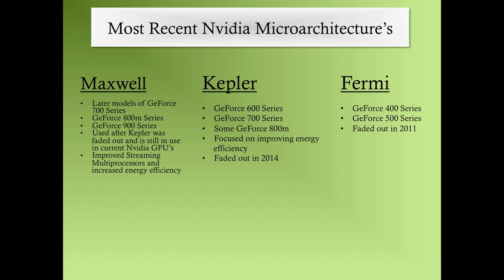They used Kepler until 2014 and then replaced it with Maxwell, which is what they're currently using. For Maxwell, they used it in the later models of the GeForce 700 series, some of the 800M, and the 900 series. There are actually two versions — Maxwell 1 and Maxwell 2 — with Maxwell 2 implemented in the GeForce 900 series, though they're basically the same with slight improvements. For Maxwell, they wanted to keep improving energy efficiency but also made a lot of improvements to the streaming multiprocessors, which are at the heart of the architecture.